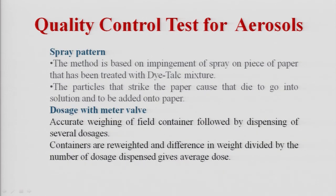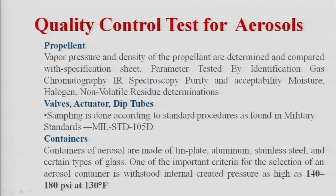Spray pattern can be noted down using a paper treated with a dye-talc mixture. When you spray onto the dye paper, the spray pattern will be created on the paper, which you can note down. For the meter dose valve, I have already explained how meter dose valves work and how to analyze the meter dosage. Propellant vapor pressure and density need to be determined and compared with the specification sheet.